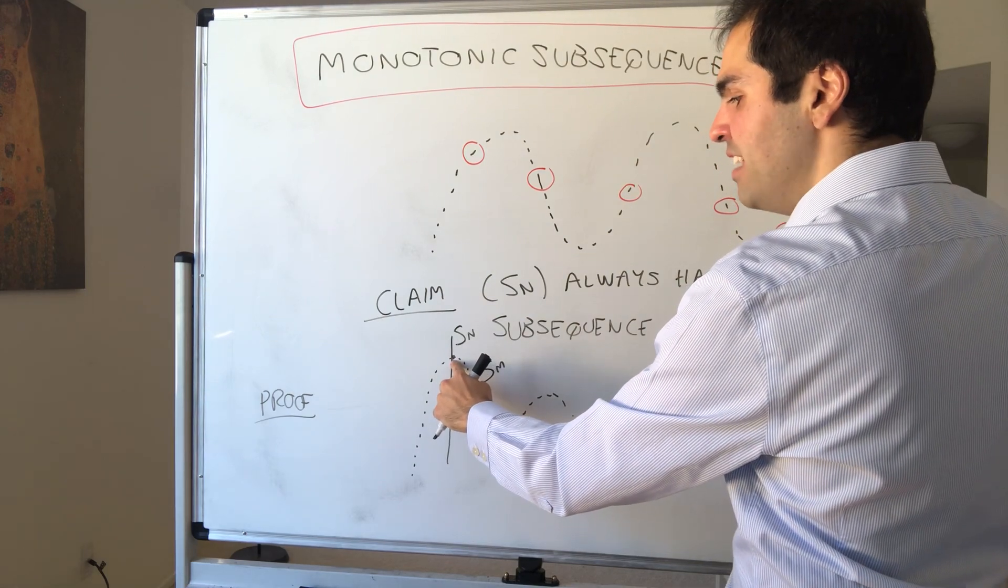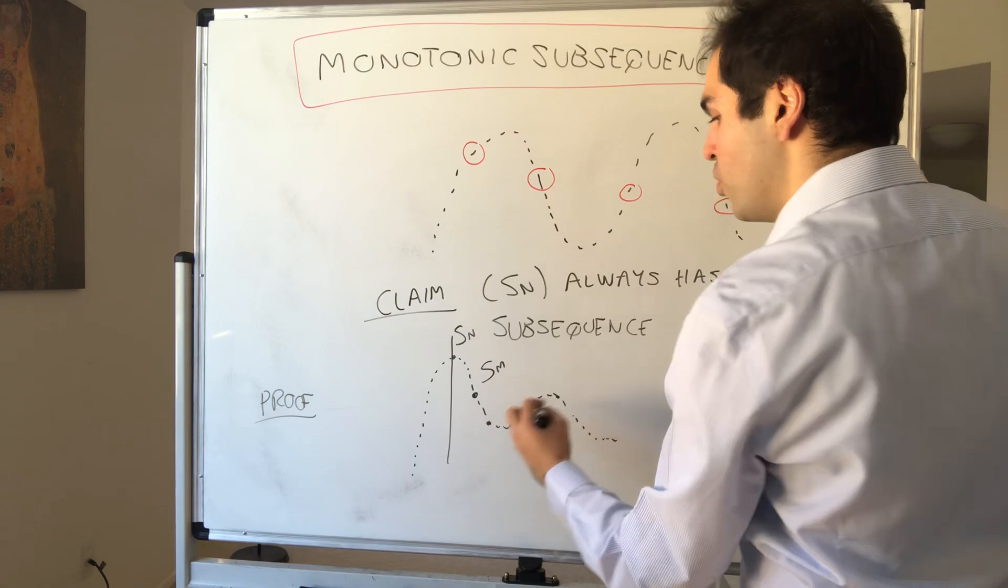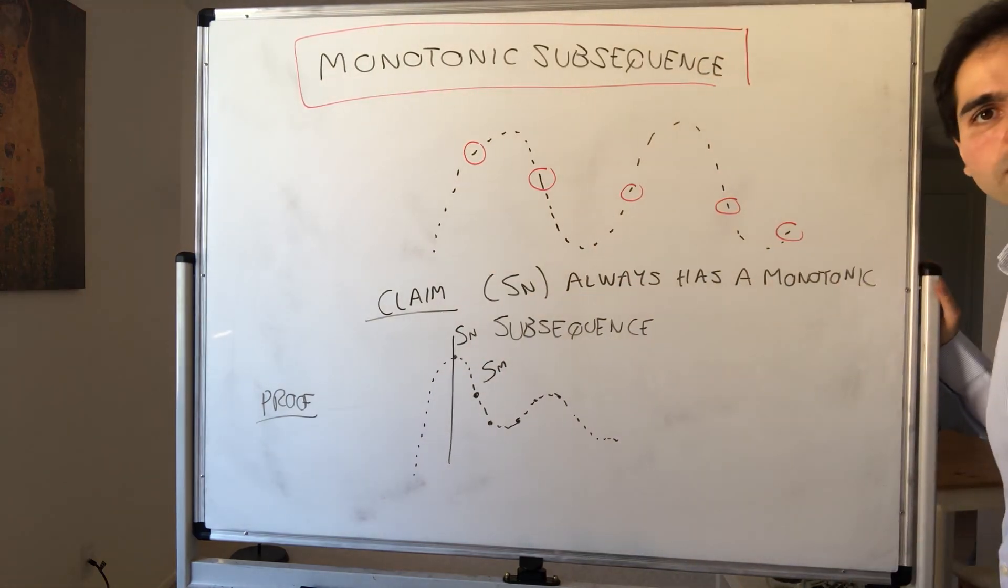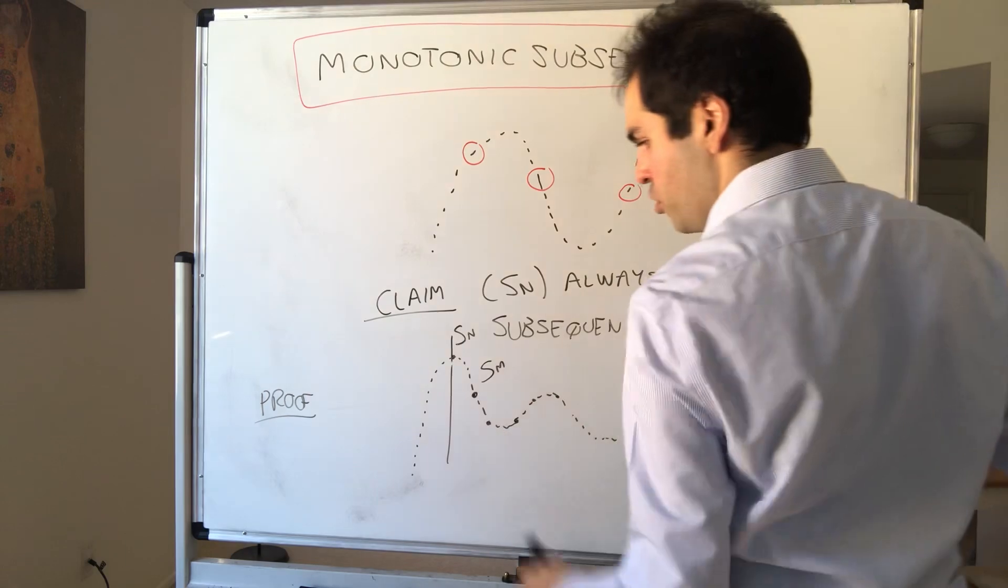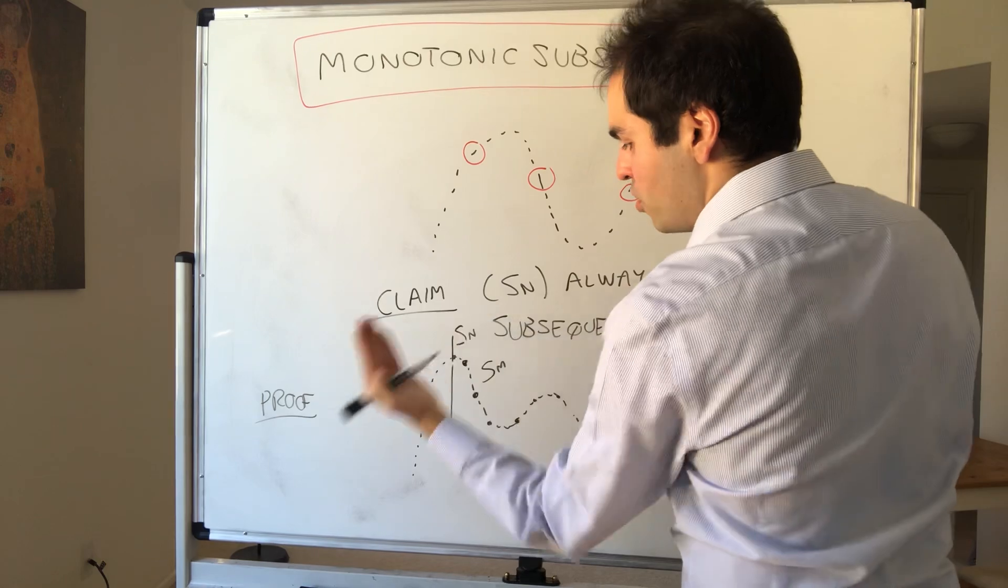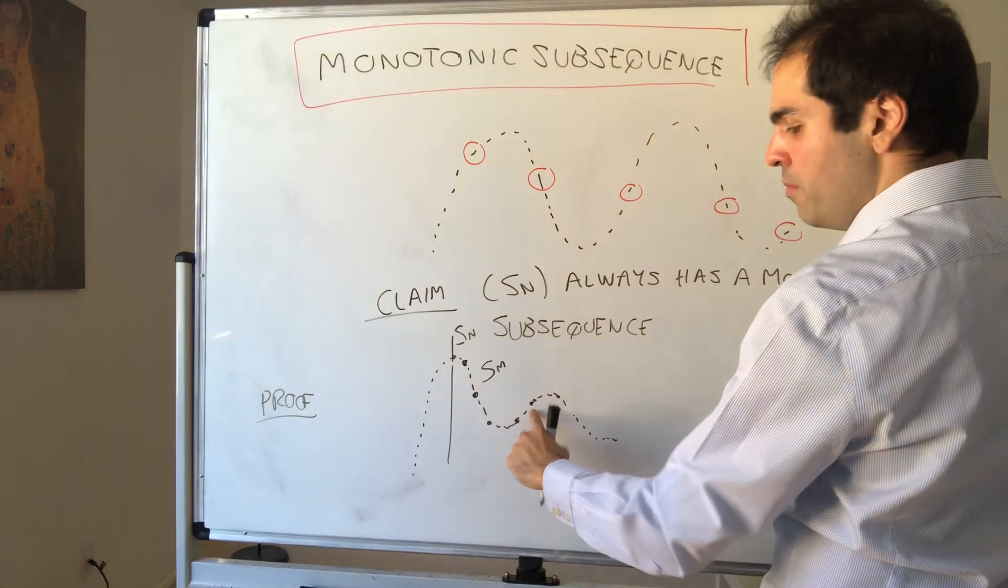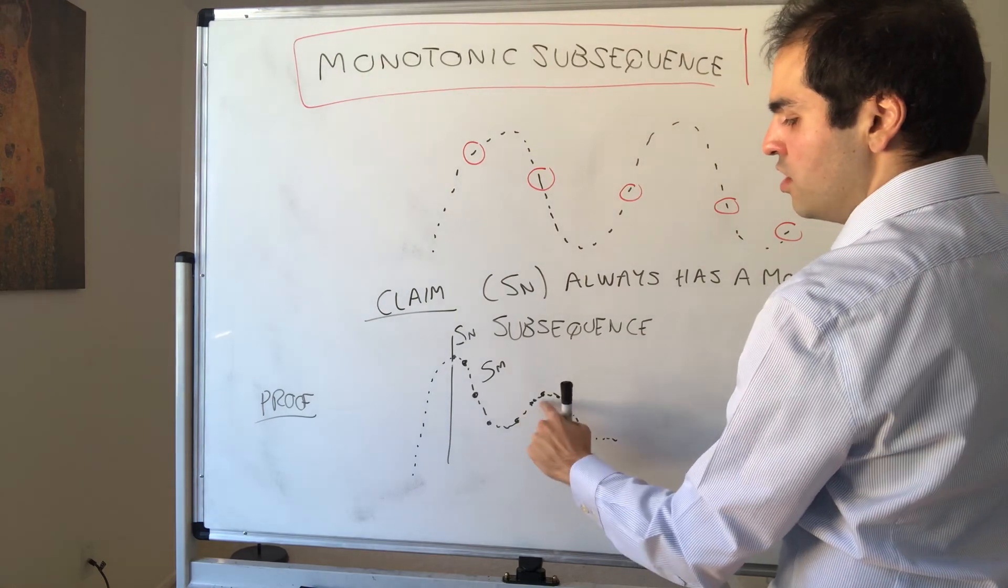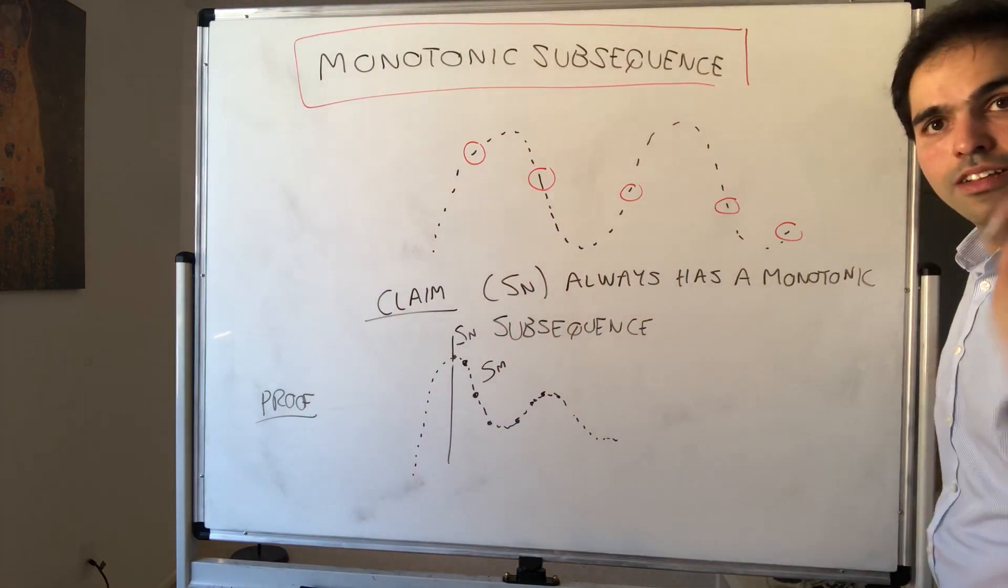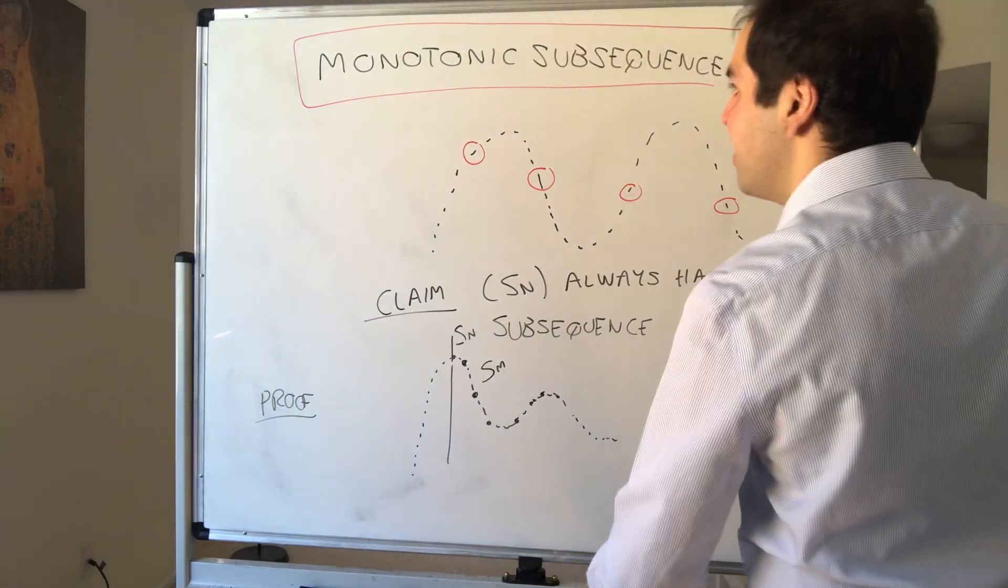So, for instance, here, Sn is dominant because no matter which term you pick afterwards, it's definitely smaller than this term. But also here, this term is also dominant because anything afterwards also gets smaller. But this term is not dominant because you have at least another term that's bigger than that. So really think, almost like stocks that go down, so anything goes downhill.